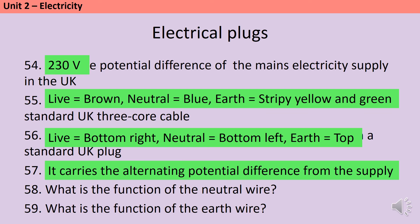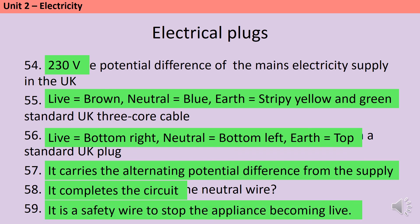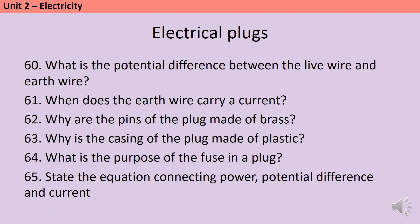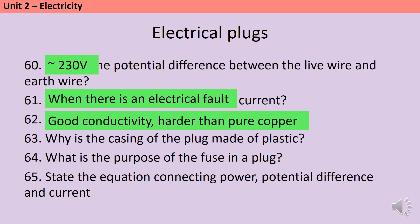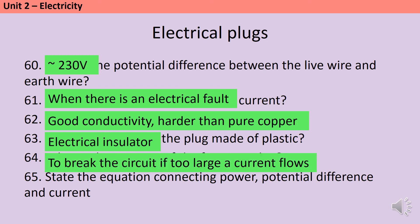The live wire carries the alternating potential difference from the supply. The neutral wire completes the circuit, and the earth wire is there as a safety feature to stop the appliance from becoming live. The potential difference between the live wire and the earth wire should be 230 volts. The earth wire only carries a current when there's a fault in the electrical circuit. The pins of the plug are made of brass because it's a very good conductor, being mainly made of copper, but also it's harder than copper so it doesn't bend so easily. And then the casing of the plug is made from plastic because this is a good electrical insulator. The fuse in the plug is there to melt and break if an electrical surge happens.